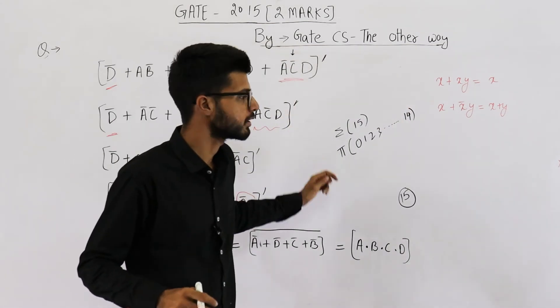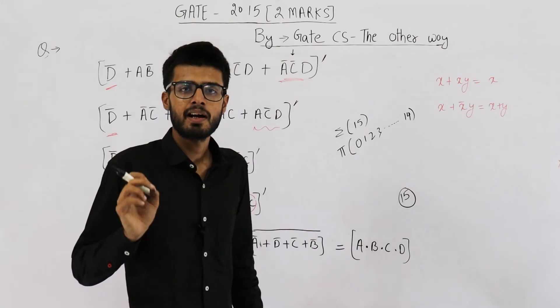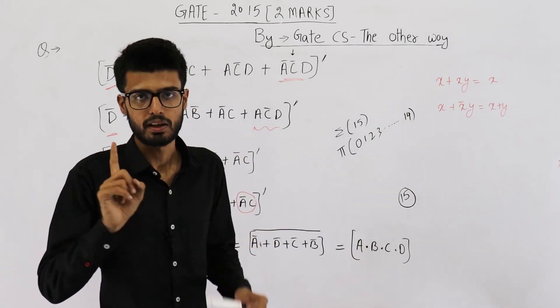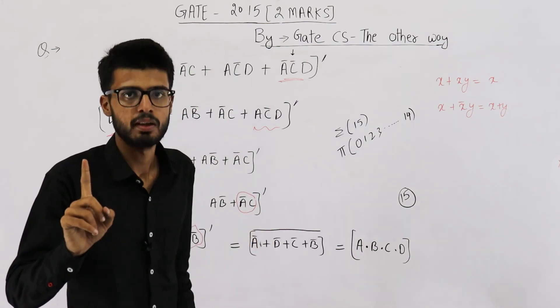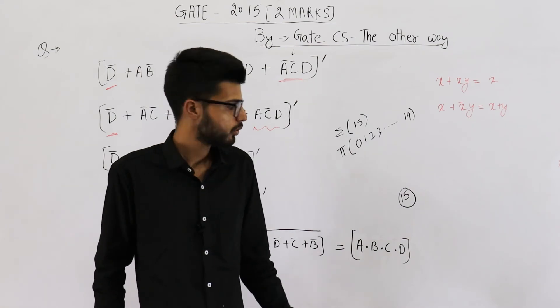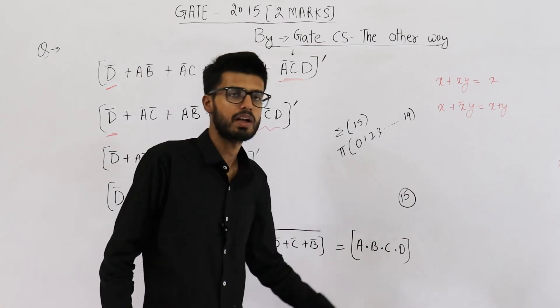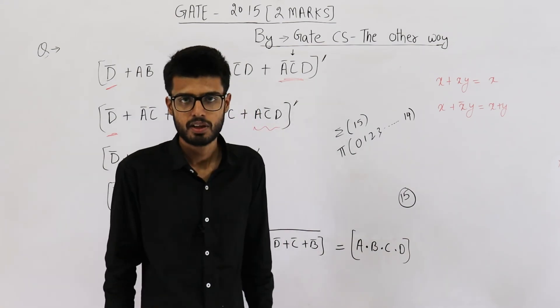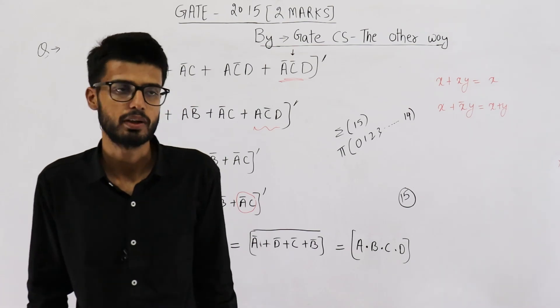We have all the terms in continuity from 0 to 14. This is the function and the answer to this question is 1. They were asking the number of minterms — we have only one minterm which is 15. So the answer is 1.